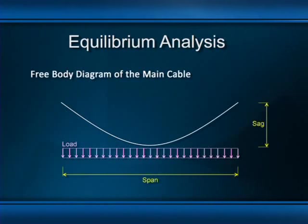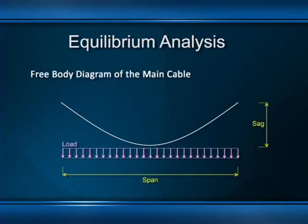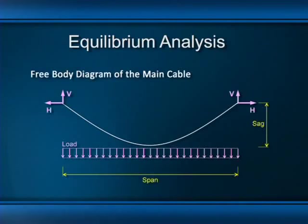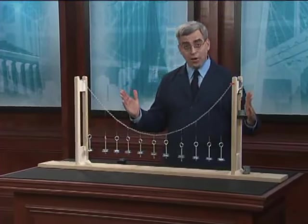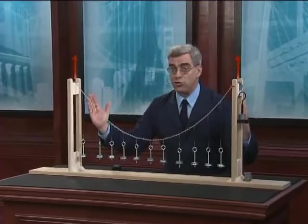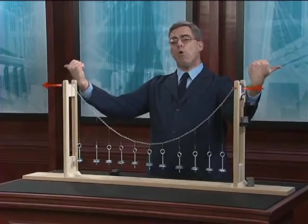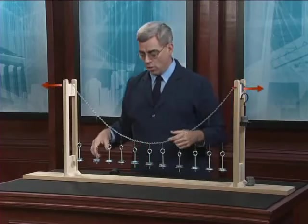The cable has a uniformly horizontally distributed load — the type expressed in pounds per foot along the entire bridge deck. The weight of the cable itself is assumed negligible in comparison. The cable also needs both vertical and horizontal reactions: the vertical reactions hold the cable up and the horizontal reactions prevent it from pulling inward under the action of the load.